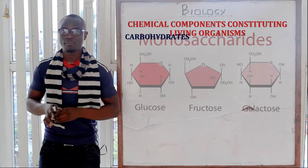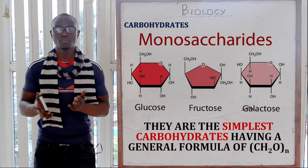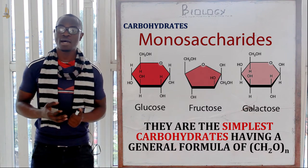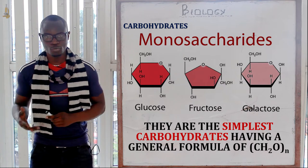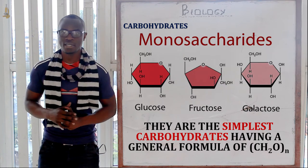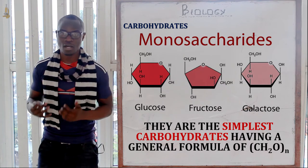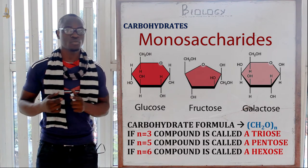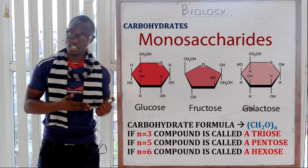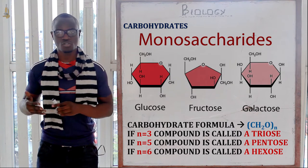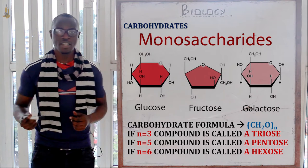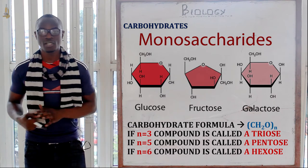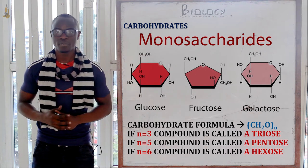Monosaccharides are the simplest sugars and have the general formula (CH₂O)ₙ, where N is the number of carbon atoms. When N equals 3, the compound is called a triose. When N equals 5, the compound is called a pentose. When N equals 6, the compound is called a hexose, which is the most common.